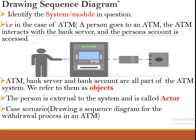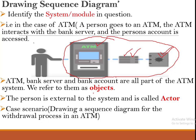Now that we have understood all the components of a sequence diagram, we are going to take a case scenario of an ATM. We need to ask ourselves which system and which module we have in mind. In our case, we have an ATM system where a user goes to an ATM, the ATM interacts with a bank server, and a personal account is accessed. The ATM, the bank server, and the bank account are all parts of the ATM system.